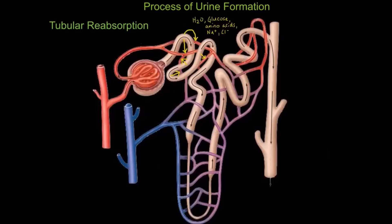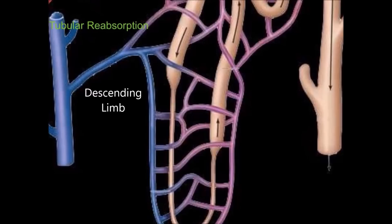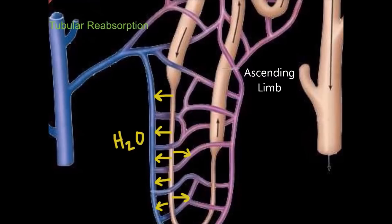From the proximal convoluted tubule, substances move into this u-shaped structure called the loop of Henle, which has two parts: the descending limb and the ascending limb. In the descending limb of the loop of Henle, there is further tubular reabsorption of water, and in the ascending limb of the loop of Henle, there is further tubular reabsorption of sodium and chloride ions.